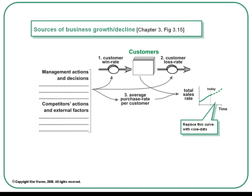Strategy dynamics places great importance on the issue of how resources accumulate and deplete, and customers are clearly an important example of this. This framework for Chapter 3 shows how growth in the total sales of a business depends on the number of customers it has and on the average purchase rate of those customers. It then goes on to focus attention on how customers are won and how customers are prevented from being lost. It's then useful to give some consideration to the actions and decisions that management take in their efforts to control these three items, together with the actions of competitors and external factors that may make that task difficult. You'll find more information on this framework in Chapter 3 and in the summary segment and segment 3.1 of the video class that supports that chapter.